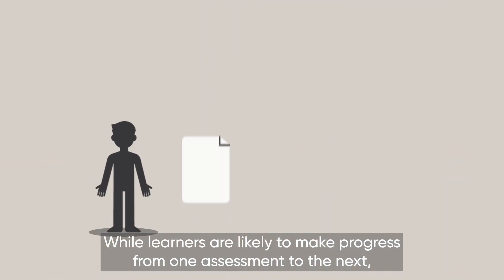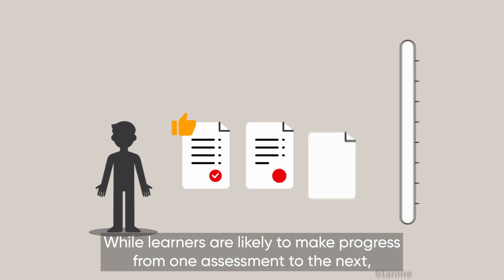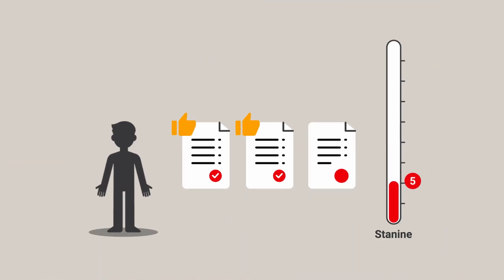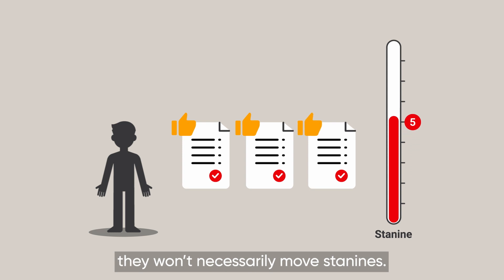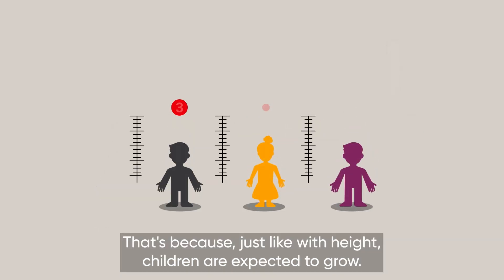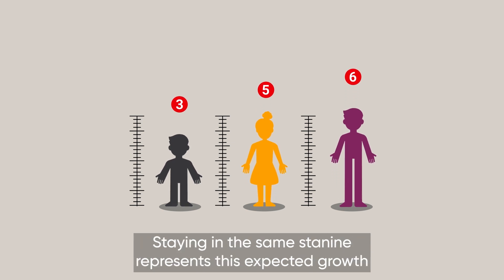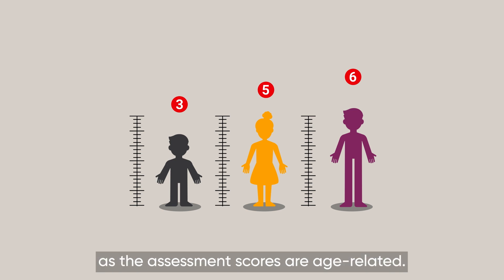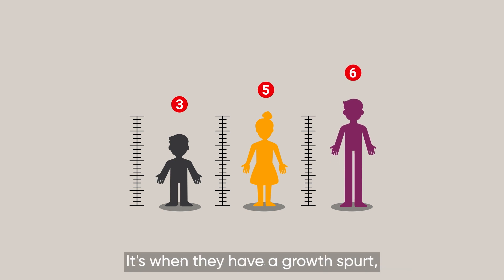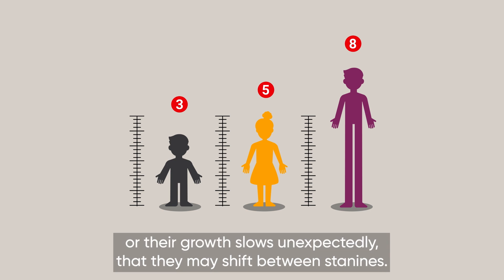While learners are likely to make progress from one assessment to the next, they won't necessarily move STAN9s. That's because, just like with height, children are expected to grow. Staying in the same STAN9 represents this expected growth, as the assessment scores are age-related. It's when they have a growth spurt, or their growth slows unexpectedly, that they may shift between STAN9s.